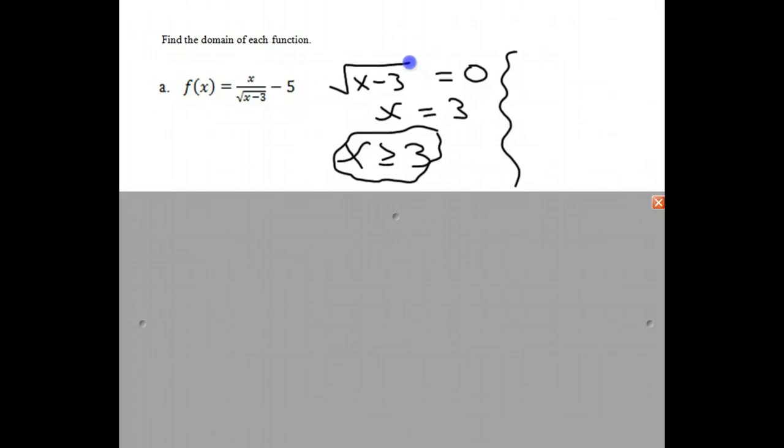We also know that we cannot have a zero in the denominator. So the question is, what would make the square root of x minus 3 zero? And we just did that. We noticed that if the square root of x minus 3 is zero, then x must be equal to three.